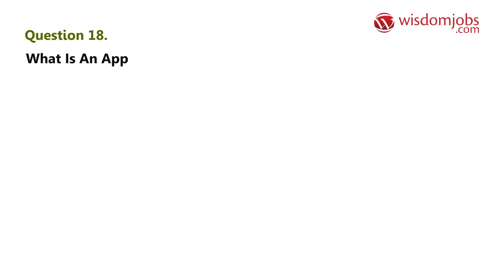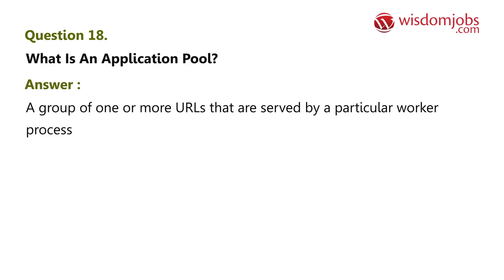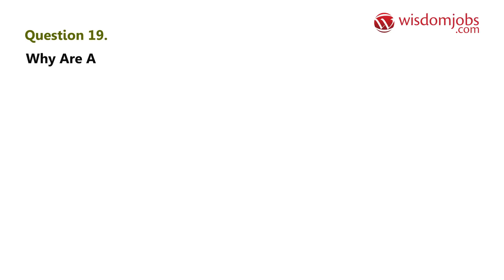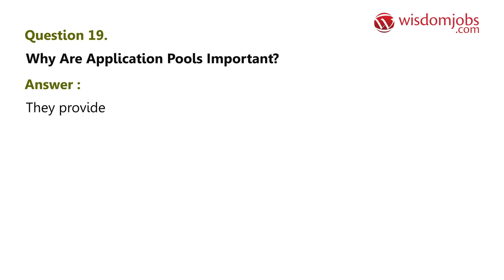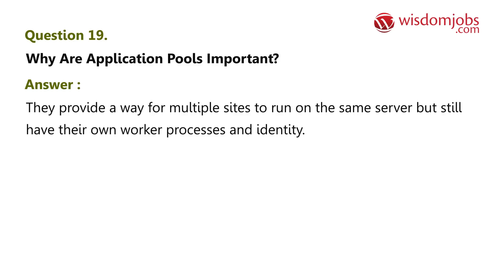Question 18: What is an application pool? Answer: An application pool is a group of one or more URLs that are served by a particular worker process or set of worker processes. Question 19: Why are application pools important? Answer: They provide a way for multiple sites to run on the same server but still have their own worker processes and identity.